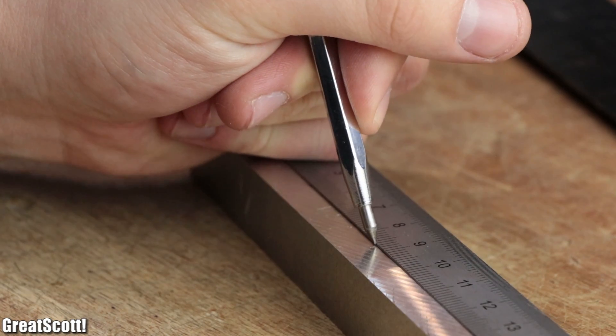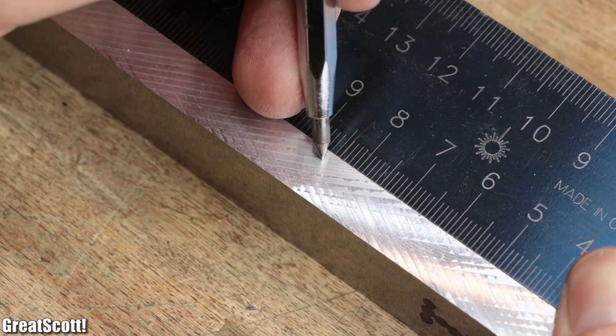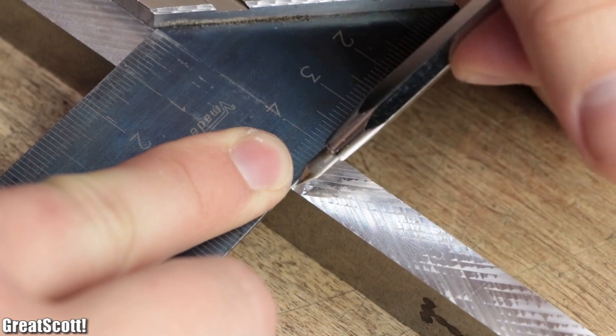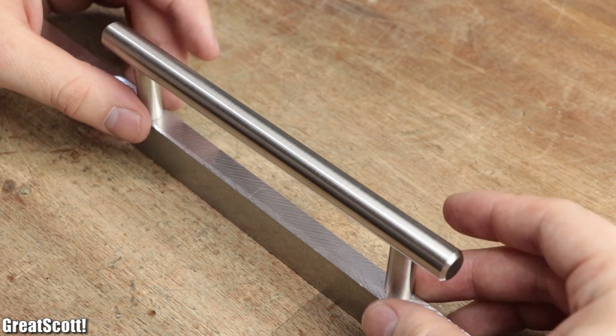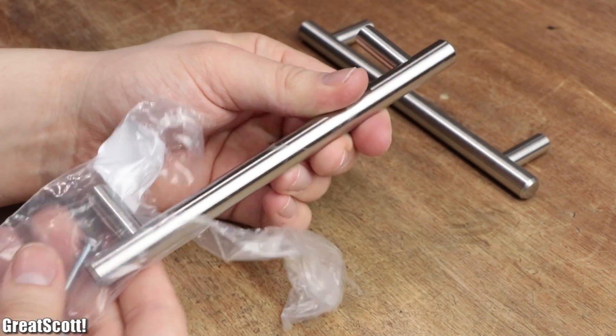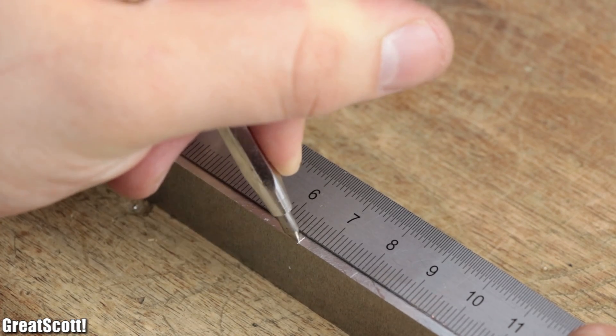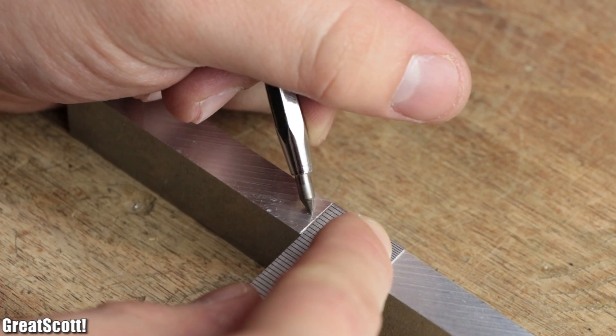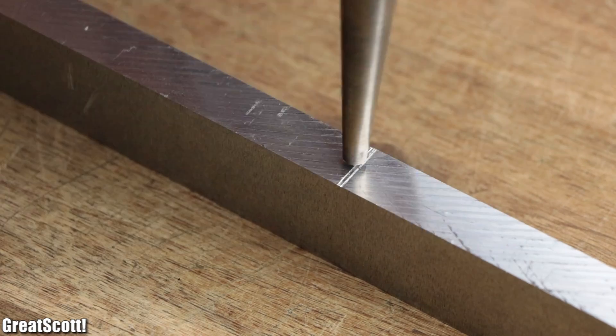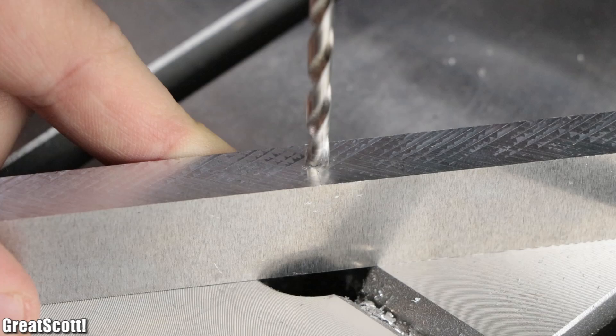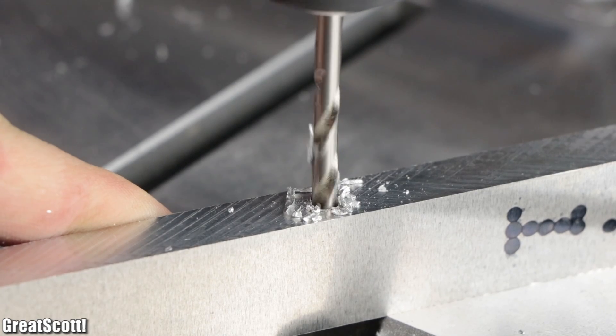So I continued by marking two spots in the middle of the two shorter bar pieces with a distance of 8.6 cm from the outer edges. Those measurements were given by the stainless steel handles that I picked up from my local hardware store beforehand. The longer bar pieces though also received two markings, each 6.5 cm from the left and right edge.